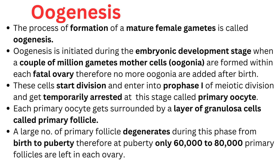The process of formation of mature female gamete is called oogenesis. Oogenesis is initiated during the embryonic development stage — in the womb of the mother — when a couple of million gamete mother cells, or oogonia, are formed within each fetal ovary. No more oogonia are added after birth.